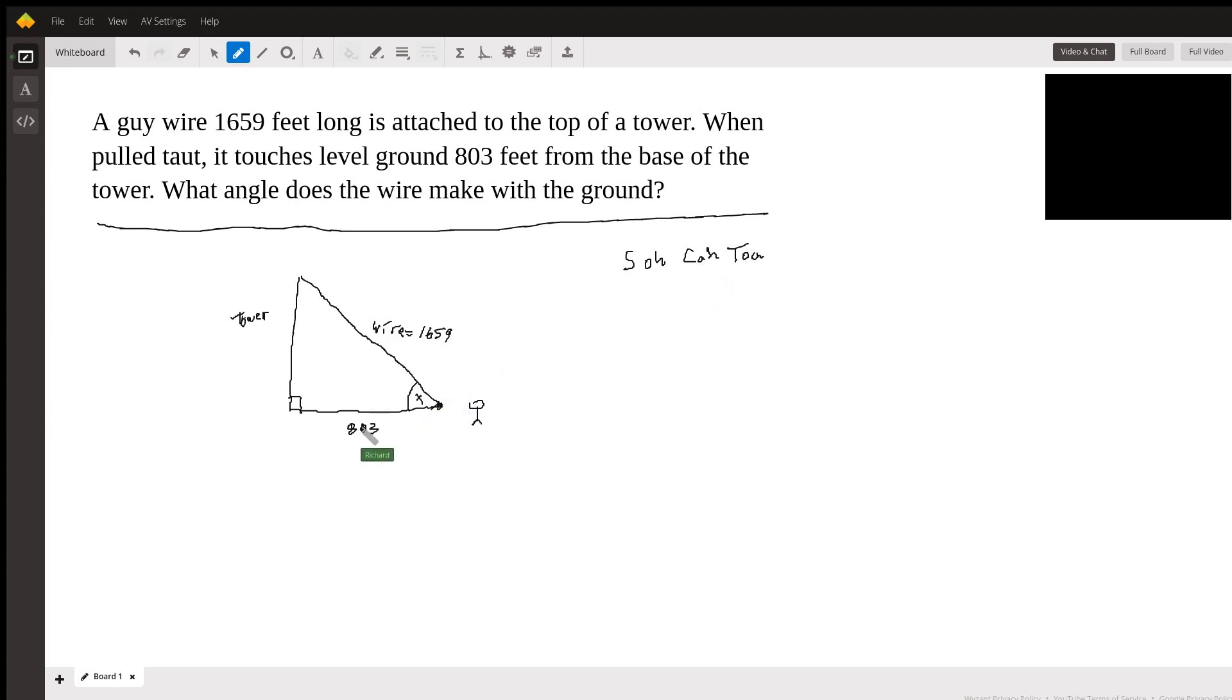Because it's going to involve the adjacent side and the hypotenuse, the cosine of x is going to be 803 over 1659.